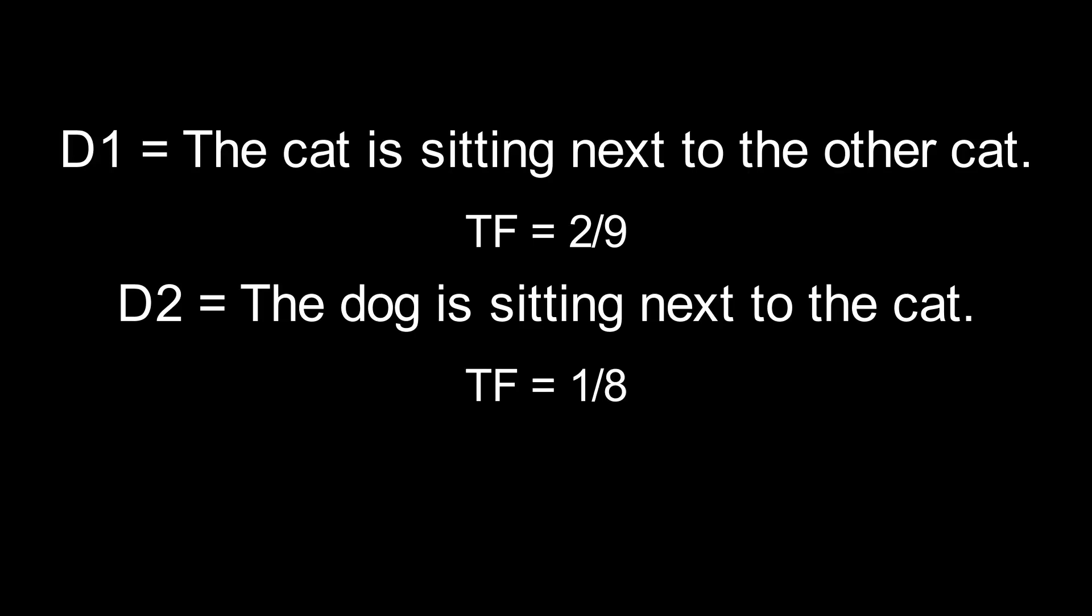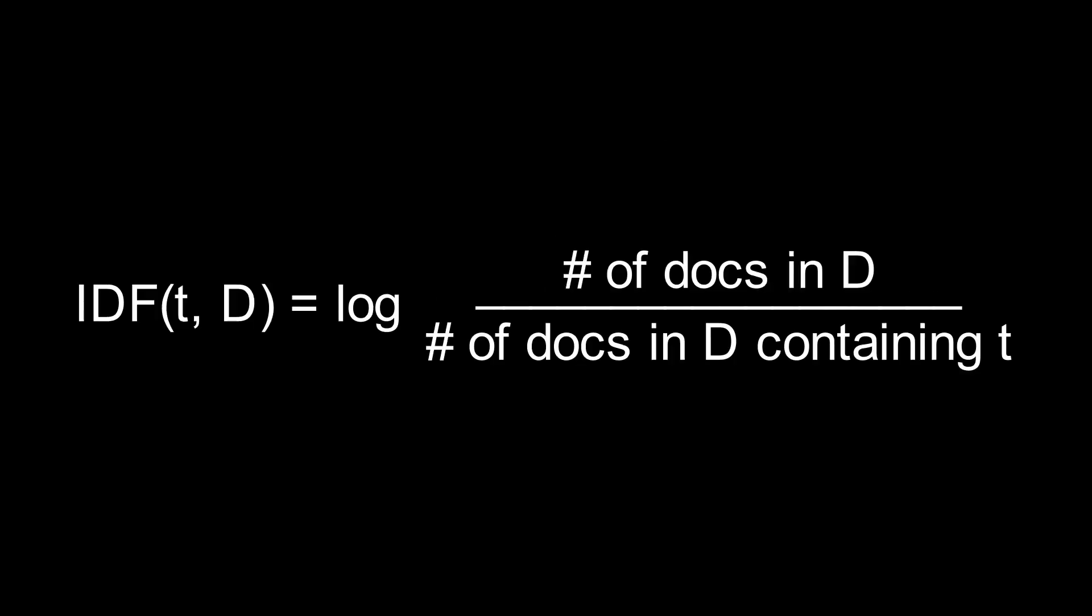The term frequency of cat is higher in Document 1 than in Document 2, so Document 1 should be more relevant to cat than Document 2. The second part of TF-IDF, Inverse Document Frequency, is the log of the total number of documents over the number of documents containing a given term.